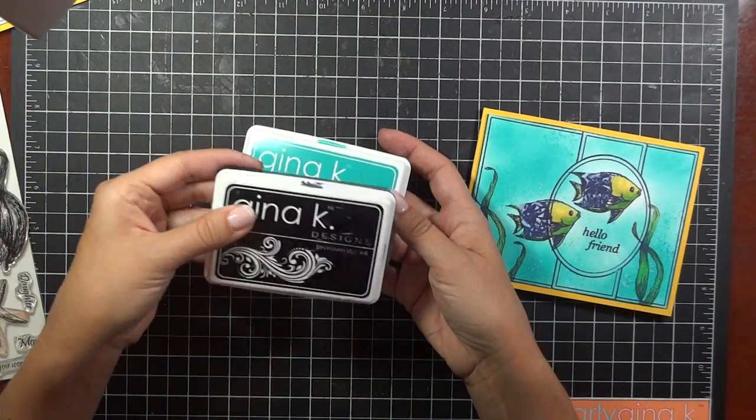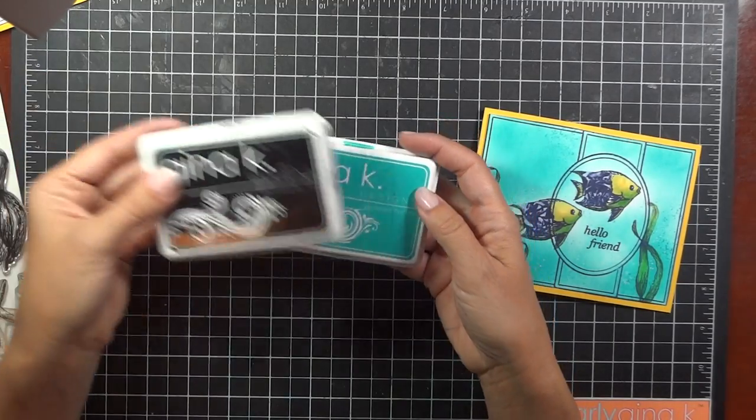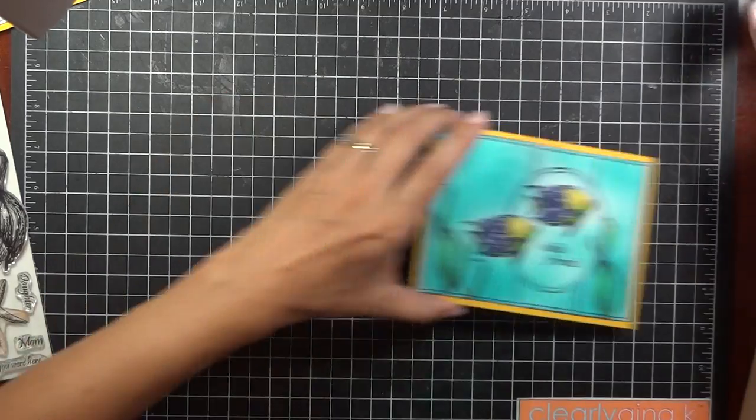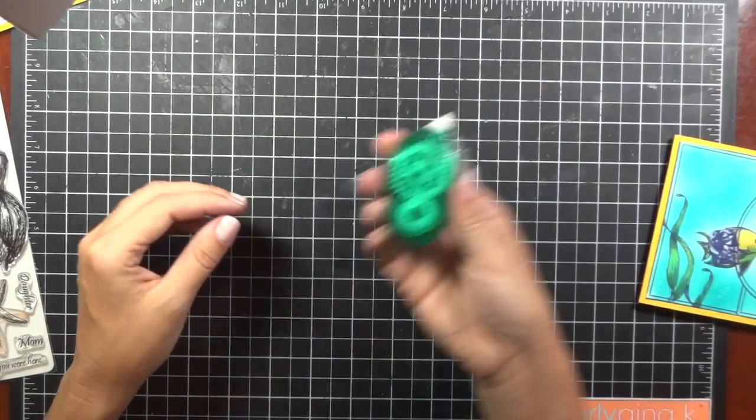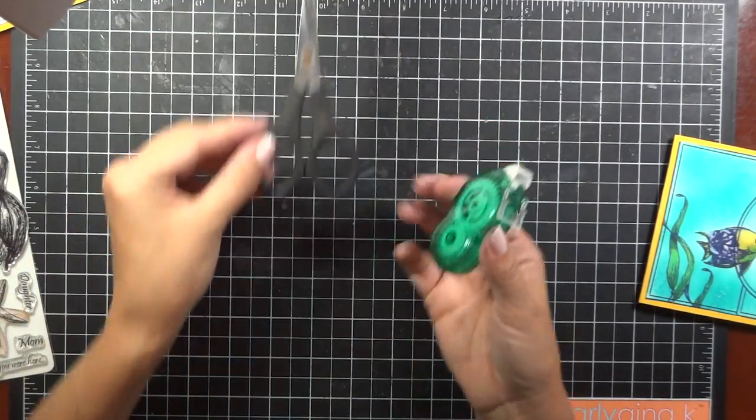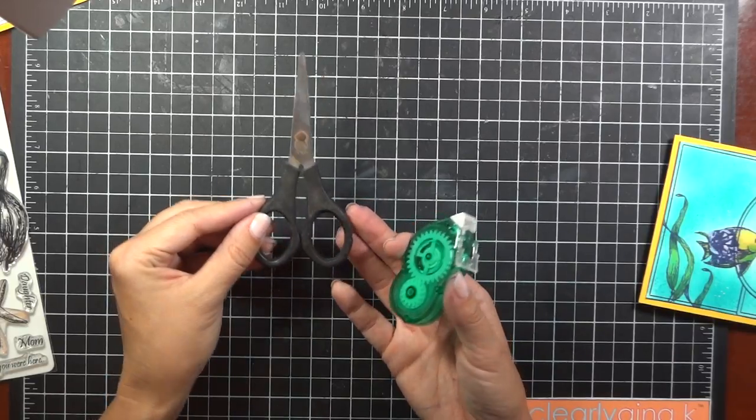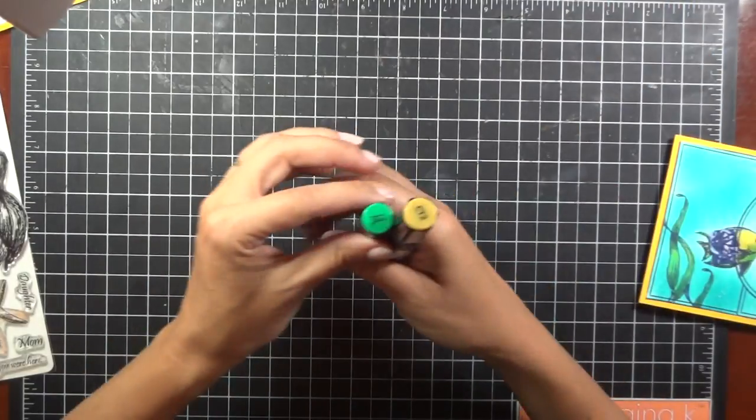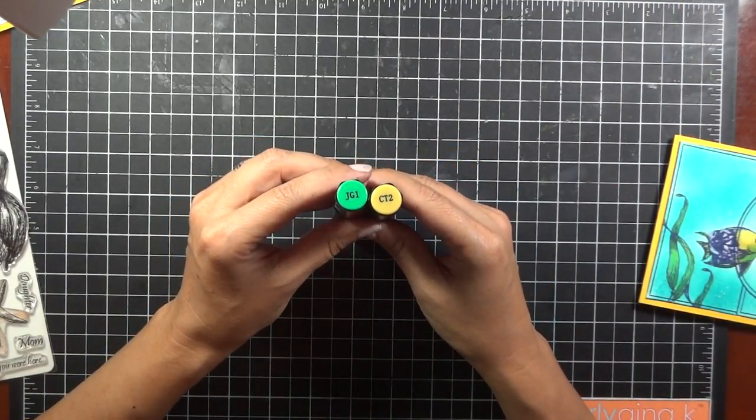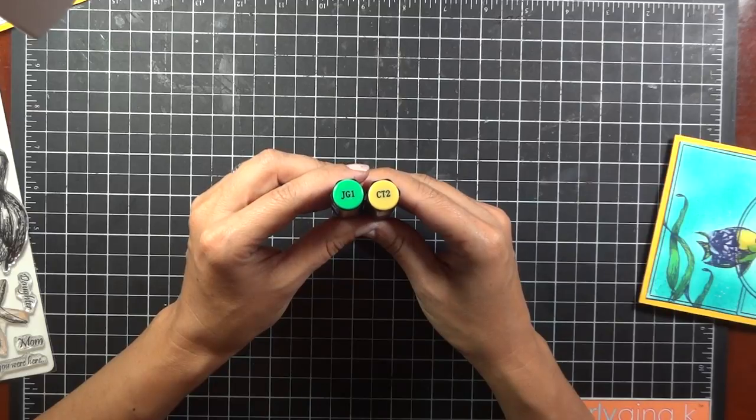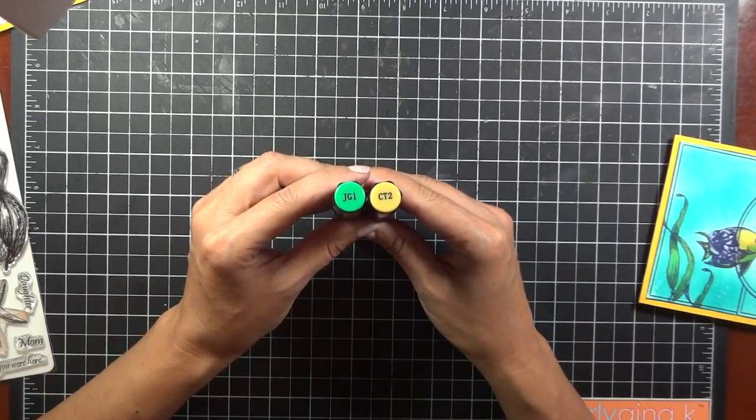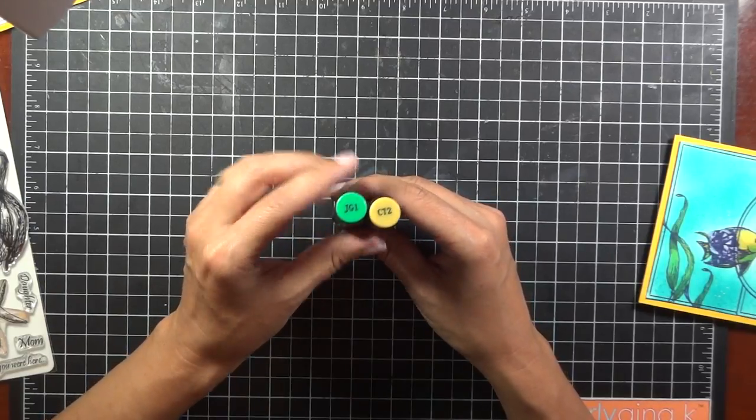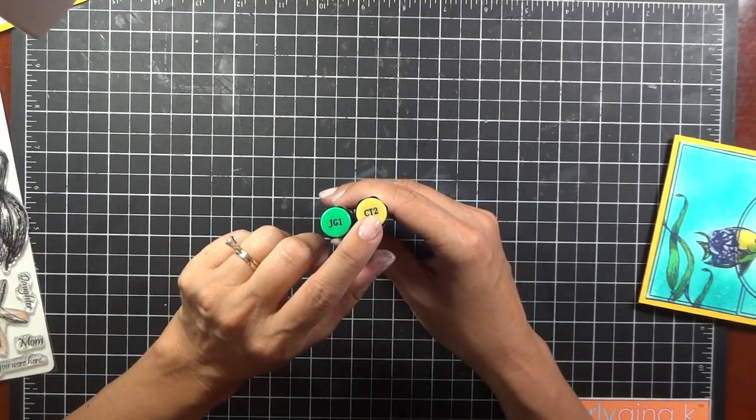The ink pads I'm using, I've got the Gina K Black Onyx and the Blue Lagoon, and then I have a sponge dauber for filling in that background with the water. I've also just got some adhesive and then scissors for cutting that down or if you want to pop either of those fish up. Finally, we've also got just a couple markers that I'm using today. I've got the CT2, which is a great match for that Wild Dandelion paper, and then the JG1, and I'm going to show you some tip-to-tip tricks of how we're going to create several shades from just these two colors.